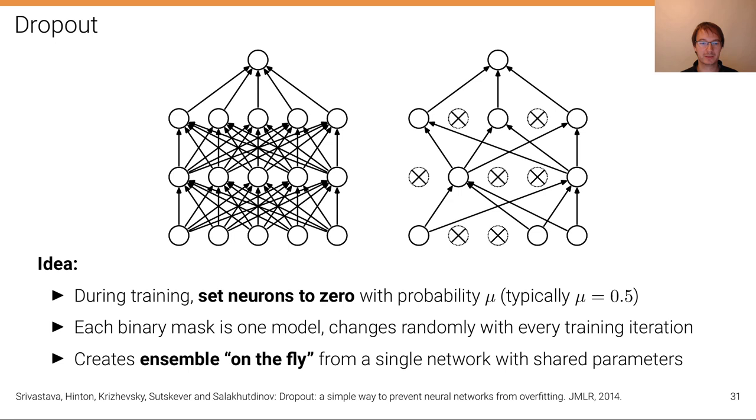is that during training we create an ensemble on the fly by setting neurons to zero with some probability, typically 0.5. Consider this example here on top: this is a simple multi-layer perceptron where we have the inputs at the bottom and the outputs at the top.